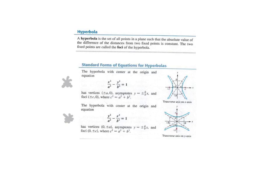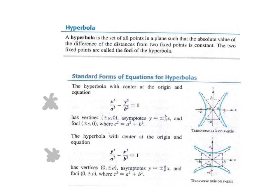Let me show you some key differences between the hyperbola and the ellipse. In the ellipse equation, the sign in between was a plus sign. Now in the hyperbola, it's always going to be a subtraction sign. Before, what changed was the a squared and the b squared. For hyperbolas, the a squared and b squared stay in the same spot. What switches places in the hyperbola are the x squared and the y squared.